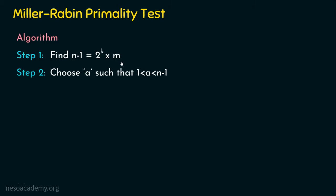After performing step one, we move to step number two, where we choose a number a. This number a must be greater than 1 and less than n minus 1. For example, if we are testing the number 11, then a should be greater than 1 and less than 11, so we can take any number from 2 to 10.